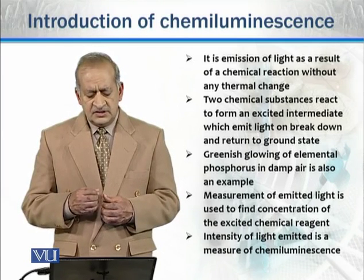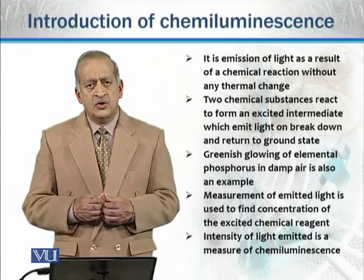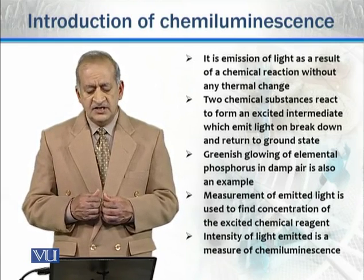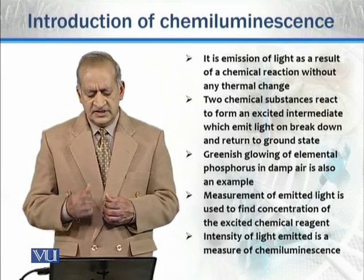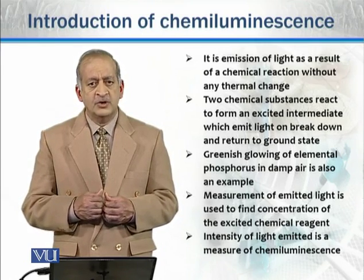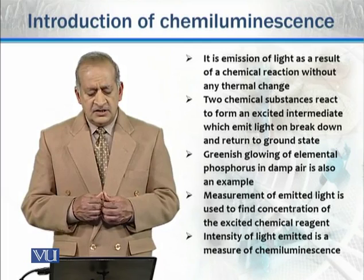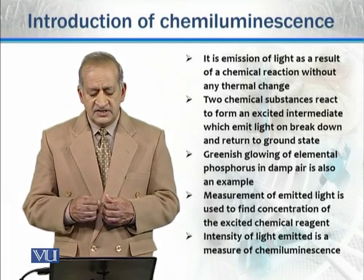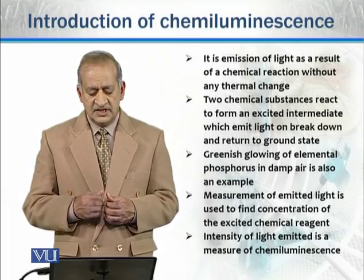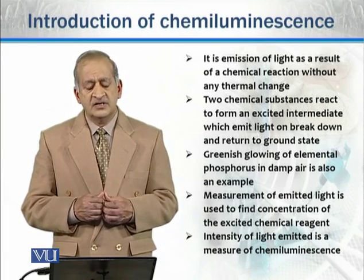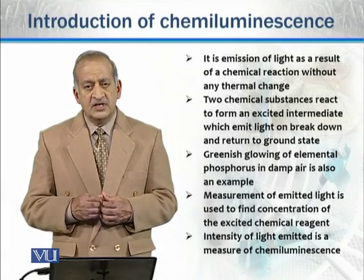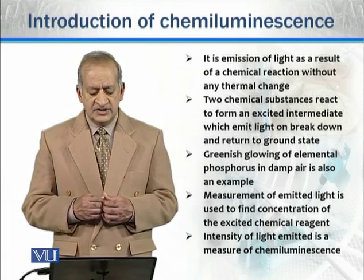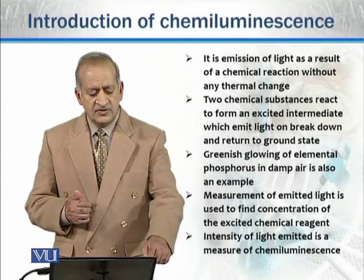The greenish glowing of elemental phosphorus in damp air is also one example of chemiluminescence. This emitted light is measured, and this measurement of emitted light is used to find the concentration of the excited chemical reagent. The intensity of light emitted is actually a measure of chemiluminescence.